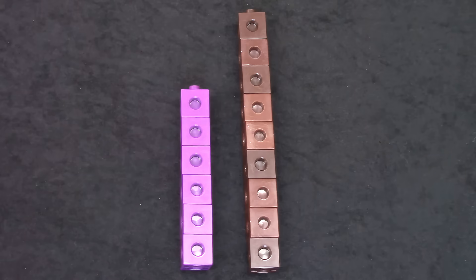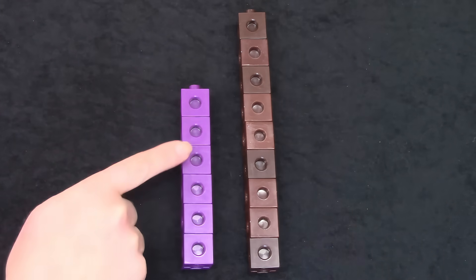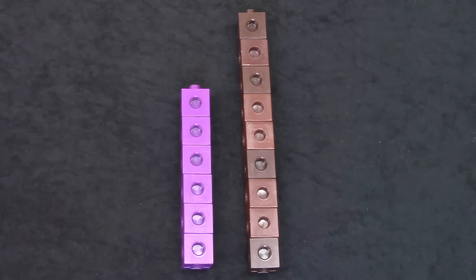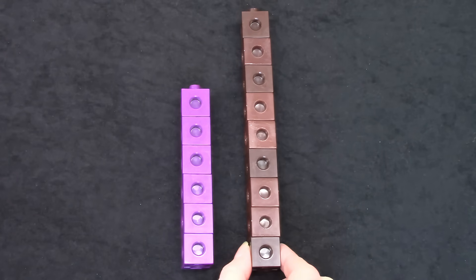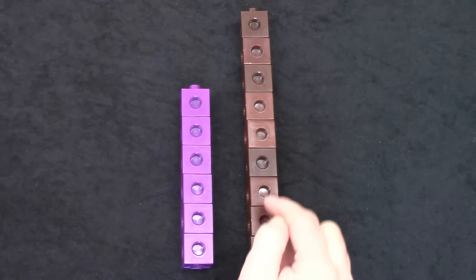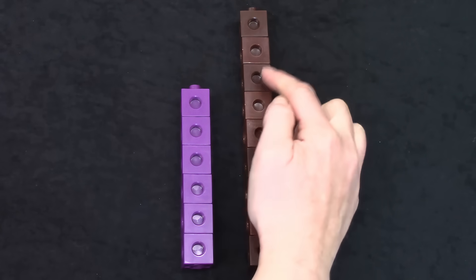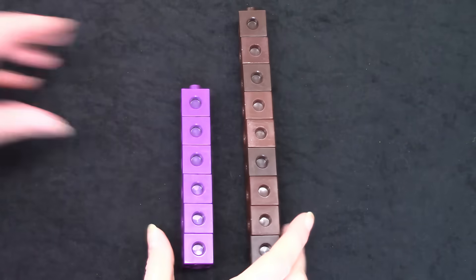Here are 2 more towers that we can compare. The purple tower on the left has 1 2 3 4 5 6 blocks. The brown tower on the right has 1 2 3 4 5 6 7 8 9.